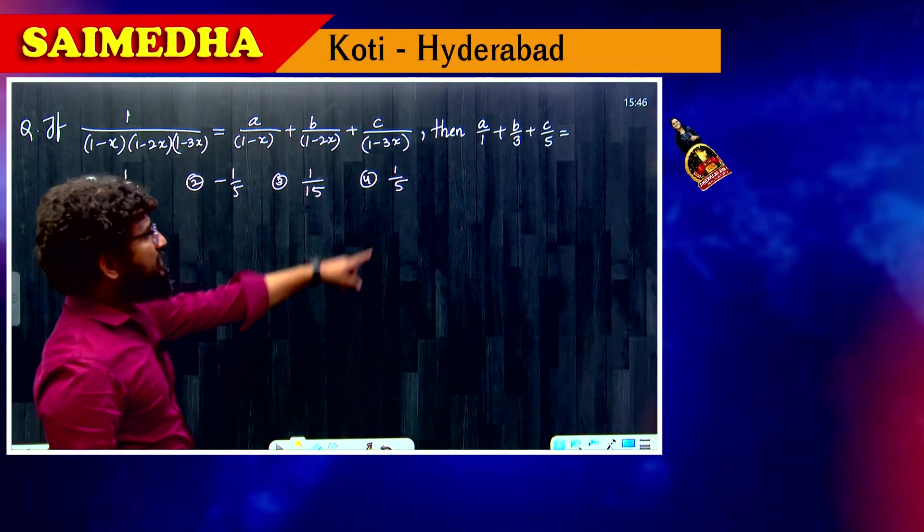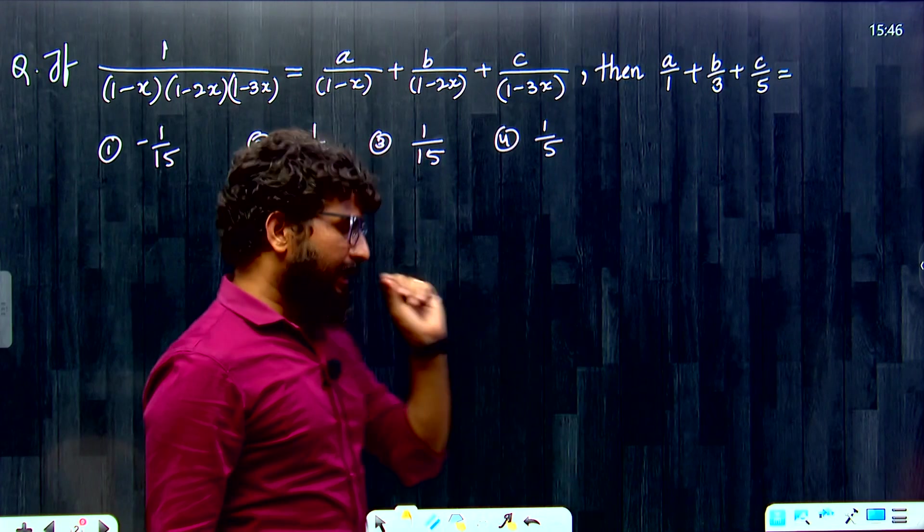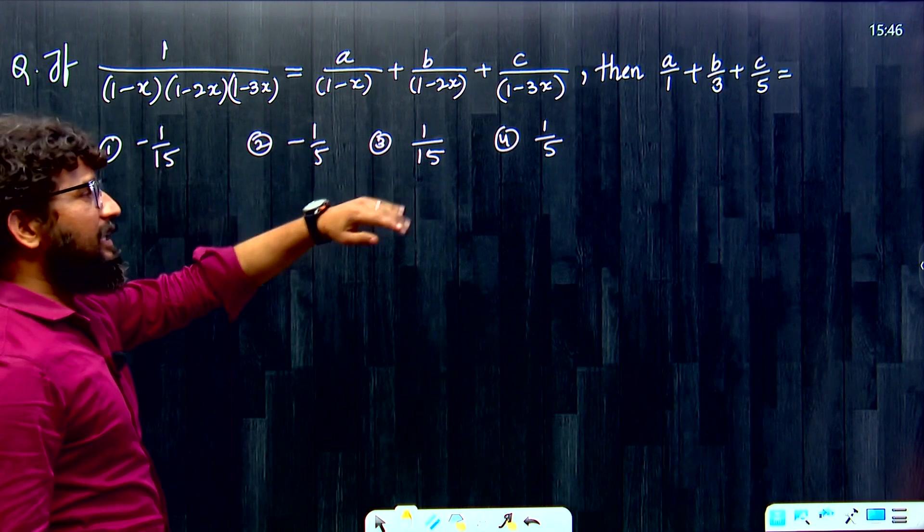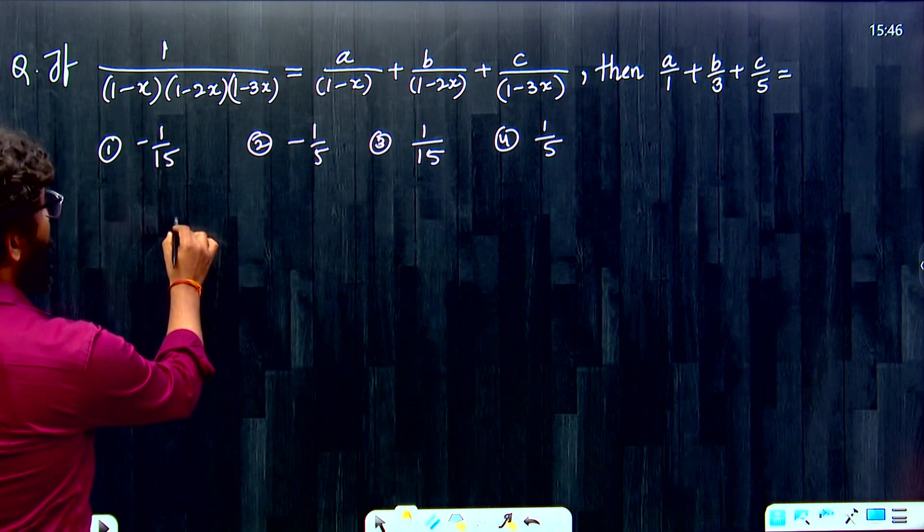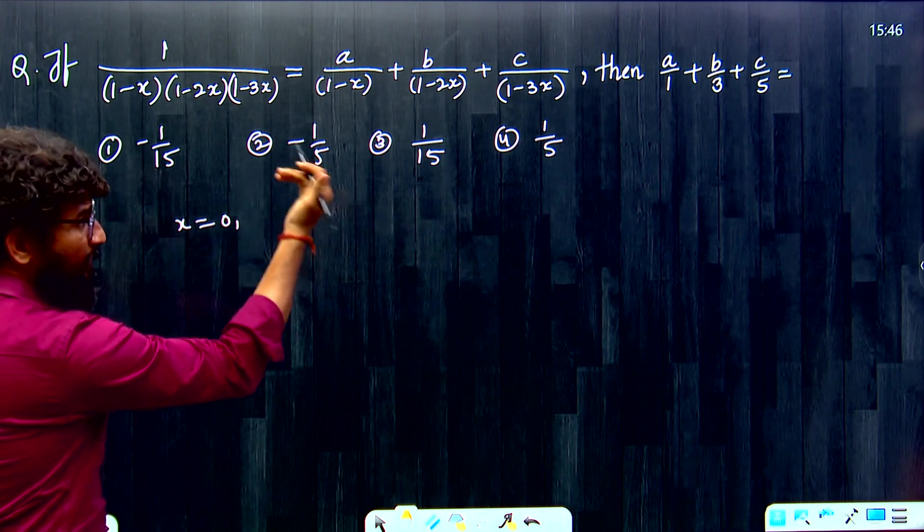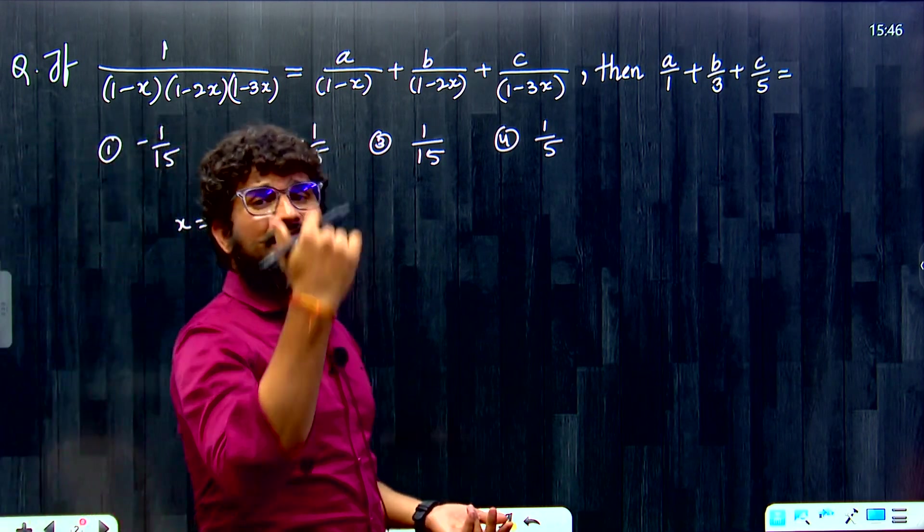Then the requirement is to find out A by 1, B by 3, C by 5. You can look at X value, substitute here. Let us look at the value then. A value substitutes here. Look at the requirement. What is my requirement? A by 1, B by 3, C by 5.